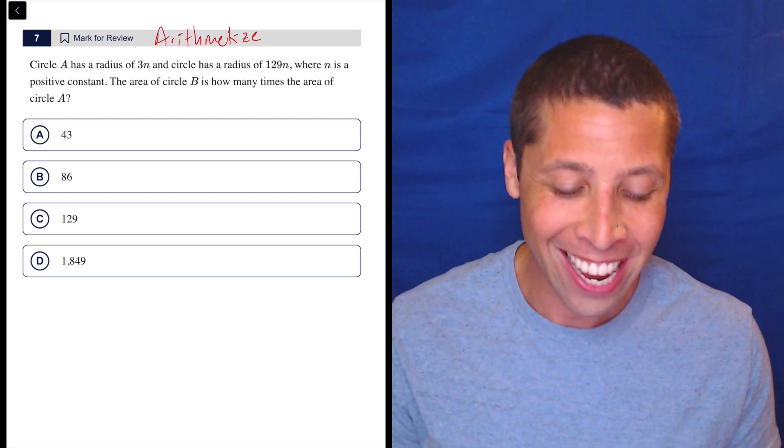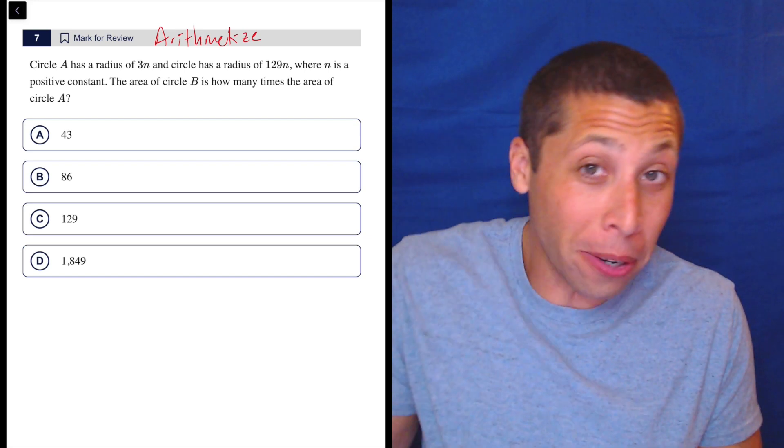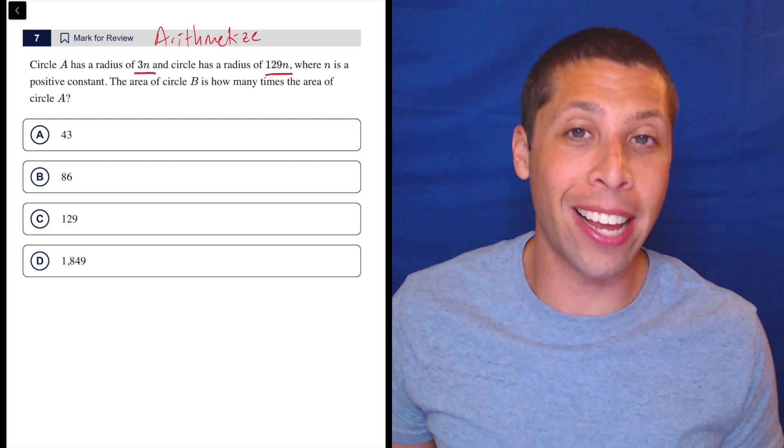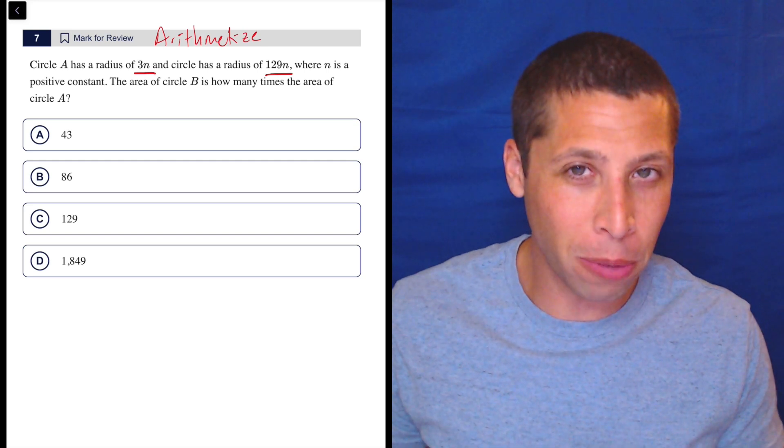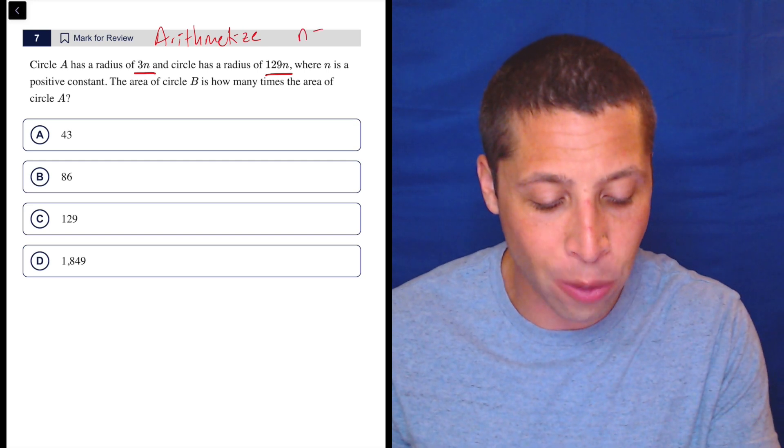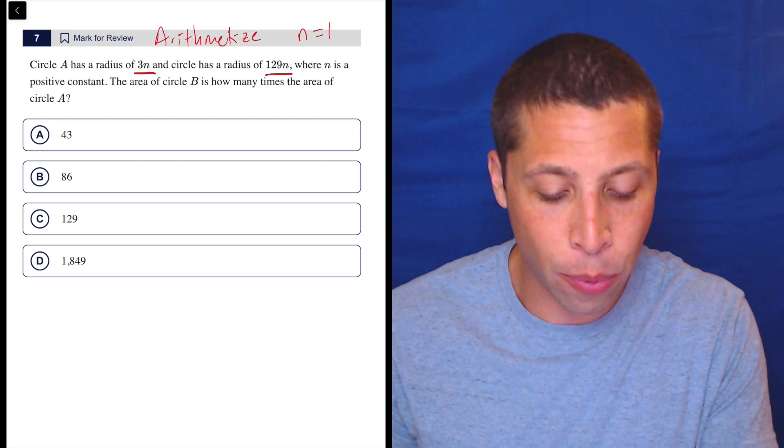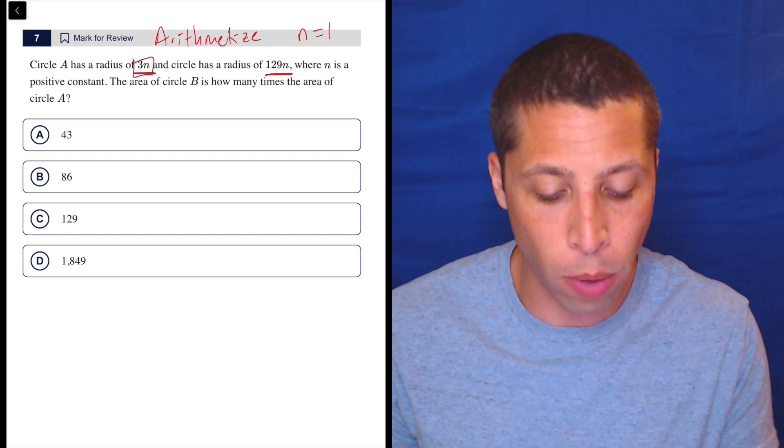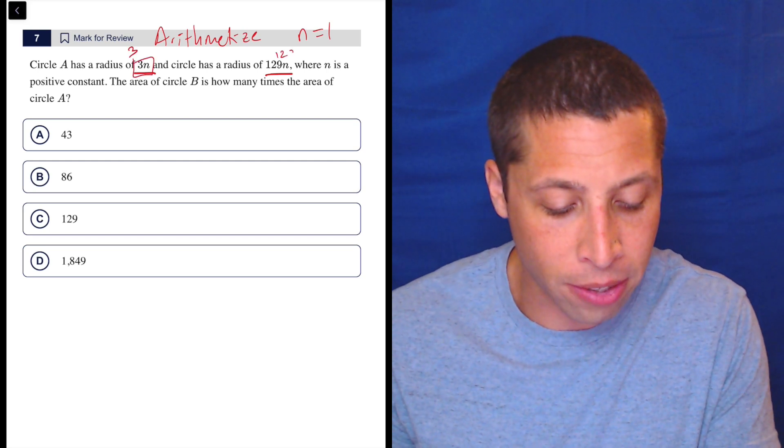There's radiuses of two circles and they deliberately made them annoying by doing 3n and 129n. But if you just had a normal number, all this is stuff you can do in the calculator. So why don't we just make n equal 1 and then think about it that way? 3 is the radius of one of them and 129 is the radius of the other.